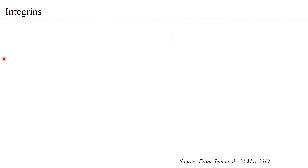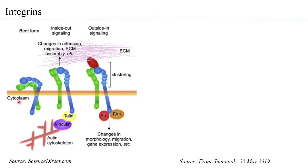Let us look at integrins first. Integrins are a cell adhesion molecule with two polypeptides — alpha-integrin and beta-integrin. Generally when not bound to either a ligand on the extracellular side or to an intracellular component, they exist in the bent form, which is the inactive form of integrins.